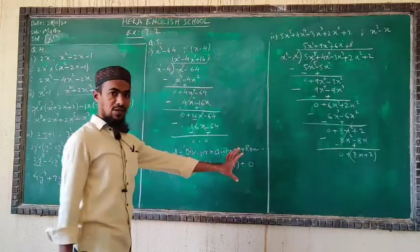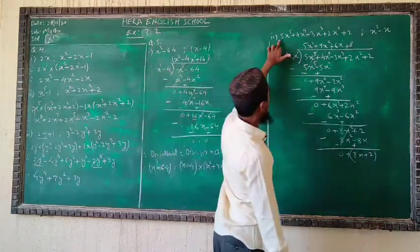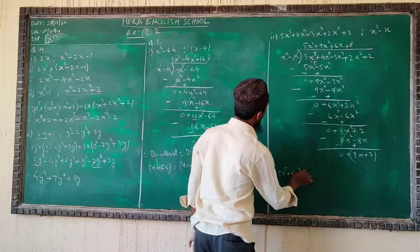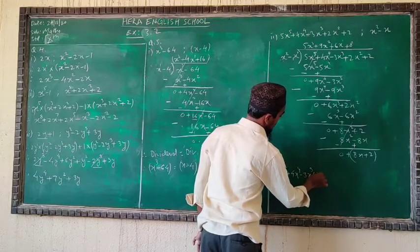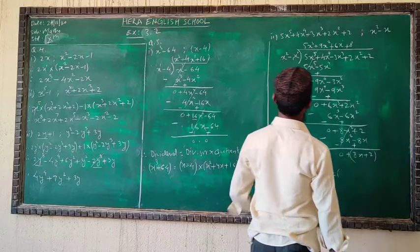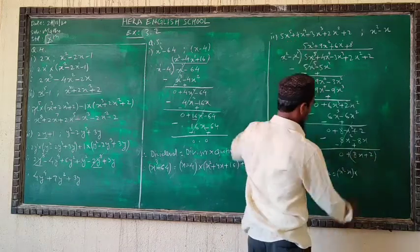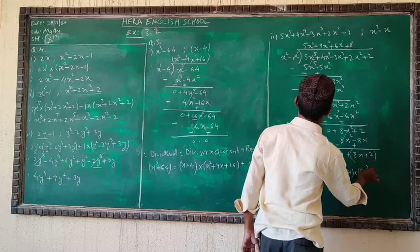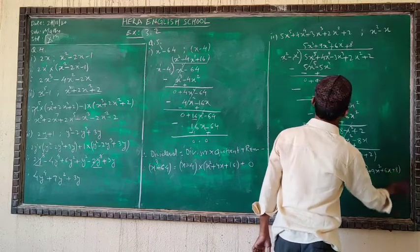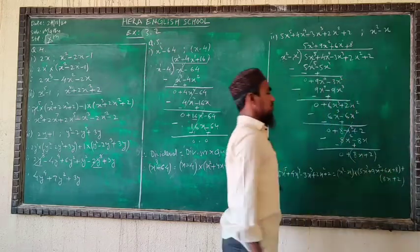Division is completed. Writing the answer in formula form: 5x⁵ + 4x⁴ - 3x³ + 2x² + 2 = (x² - x)(5x³ + 9x² + 6x + 8) + (5x + 2). The quotient is 5x³ + 9x² + 6x + 8 and the remainder is 5x + 2. This question is completed.